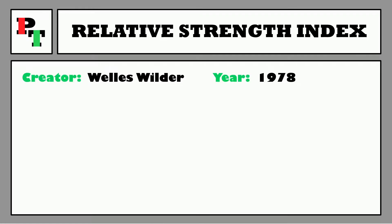Who created it? It's Wells Wilder — the infamous WW that ASAC Schrader was after for all that time. I'd certainly knock that door. It's an indicator from Wilder's book New Concepts in Technical Trading Systems, set loose on the world in 1978.